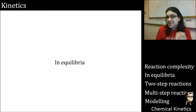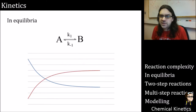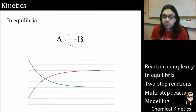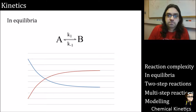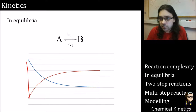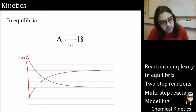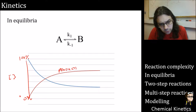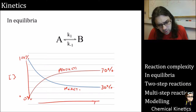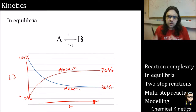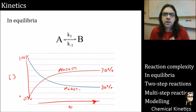We define the rate as negative of the gradient of the reactants, positive of the gradient of the products, and that equals k times A for first-order kinetics. All that the rate depends on is the concentration of A — nothing else. The next layer of complexity to add is equilibria. We covered this basically in the thermodynamics section, because equilibria are based around thermodynamic parameters.